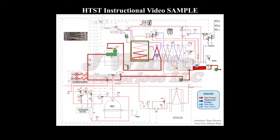Asset 44. The holding tube is where pasteurization actually occurs. The raw milk is held at or above the legal pasteurization cut-in temperature of 161 degrees for the legal minimum holding time of 15 seconds in the holding tube. Pasteurization temperature is set at 175 degrees on this HTST.